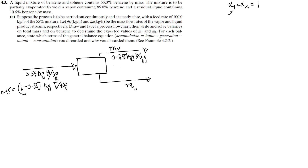That means 1 minus 0.85, which equals 0.15 kg toluene per kg in the vapor. And for the liquid, 10.6% benzene means 0.106 kg benzene per kg, so the toluene fraction is 0.894 kg toluene per kg.